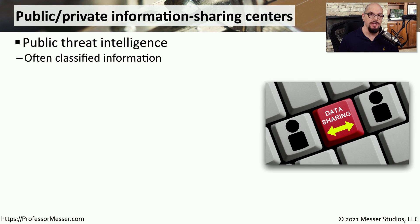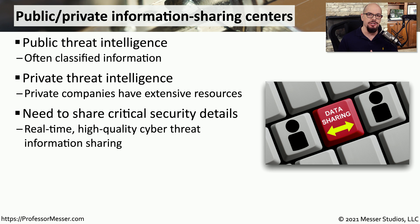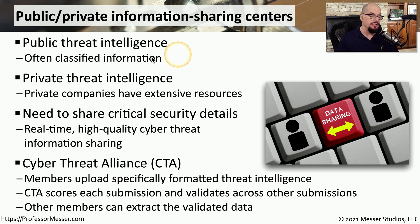Sharing this vulnerability information can be valuable for everyone. When one person identifies a vulnerability, they can let everyone else know that it exists. There are public threat intelligence databases that sometimes provide information that has been classified but made available by the federal government, and there are also private companies that share information, especially organizations that work in the IT security industry. To help ensure data is received quickly and at high quality, the Cyber Threat Intelligence, or CTA, was created. Members upload information about a particular threat, that information is evaluated and made available to other members, and other members of the CTA can validate what they're seeing on their network matches what everyone else is seeing as well.